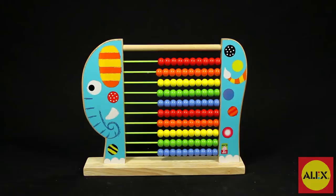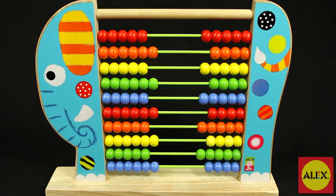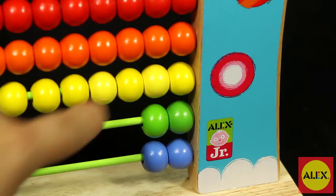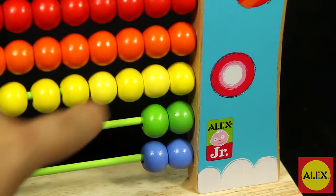As colorful and fun as this toy looks, it's just as educational. This toy will help teach babies early counting and sequencing skills. The Busy Bead Abacus is part of the Alex Junior collection of toys created specifically for baby's first years of discovery.